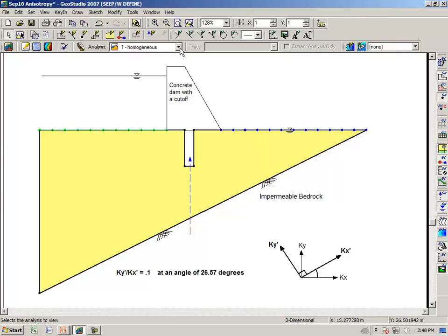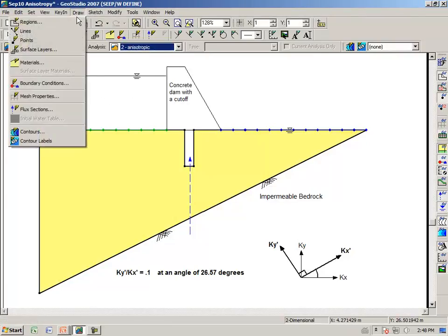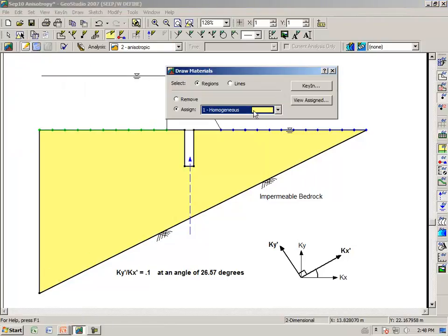Going to analysis number two then. We say draw materials. We select the anisotropic material and apply it to the region.